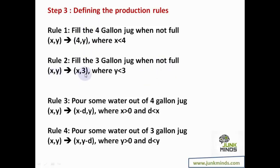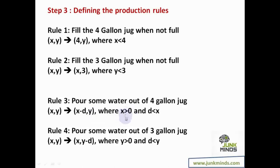Rule 3: pour some water out of the four gallon jug. If d is the amount poured out, the four gallon jug becomes x minus d and the three gallon jug remains y. For this, x must be greater than zero and d must be less than x. Rule 4: similarly, pour some water out of the three gallon jug with analogous conditions.